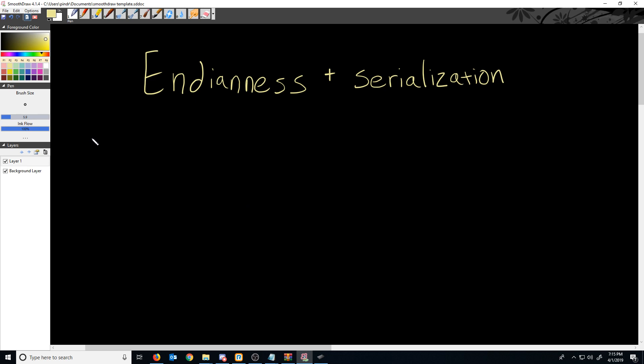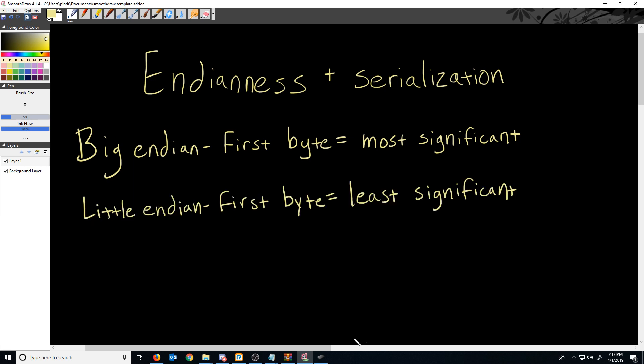In Big Endian, the most significant byte is the first byte. In Little Endian, the first byte is the least significant byte. Let's take a look at some examples.